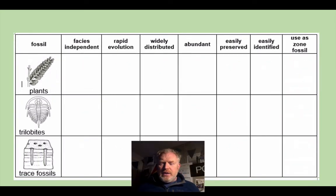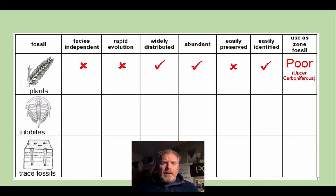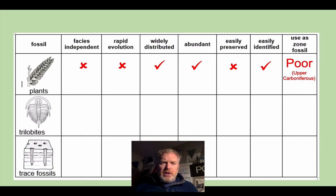Moving on to plants: plants are not independent of facies, they didn't evolve particularly rapidly, although they were widely distributed and abundant, and they're certainly not easily preserved. As a result, their use as a zone fossil is fairly poor and really confined to the upper Carboniferous — the coal swamp periods. Very limited use, and we don't spend a lot of time looking at these in terms of zone fossils.